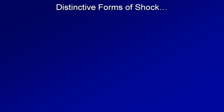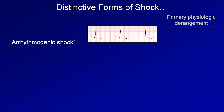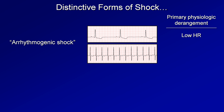You might wonder about low heart rate — where does that fit in? There are two additional distinctive forms of shock discussed less frequently. One is arrhythmogenic shock — shock that occurs secondary to a cardiac arrhythmia. This can be from a bradycardia, where the physiologic derangement is obviously low heart rate, or from a tachycardia, where the physiologic derangement is low preload due to an excessively shortened diastolic filling time. Many people refer to these as forms of cardiogenic shock, but they are quite different from shock related to low contractility, and I personally greatly prefer the term arrhythmogenic shock.